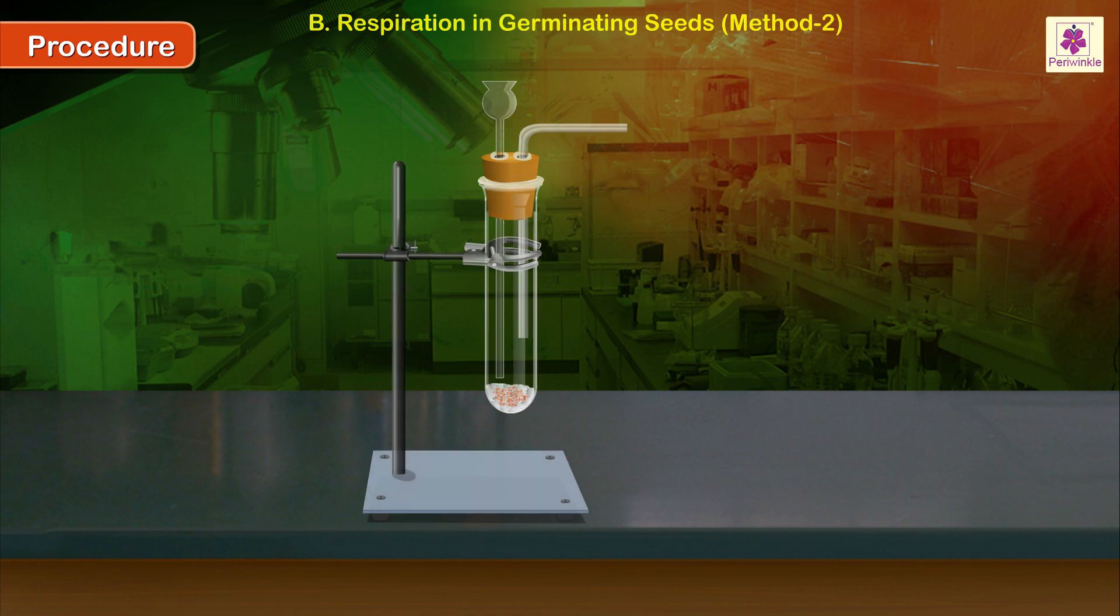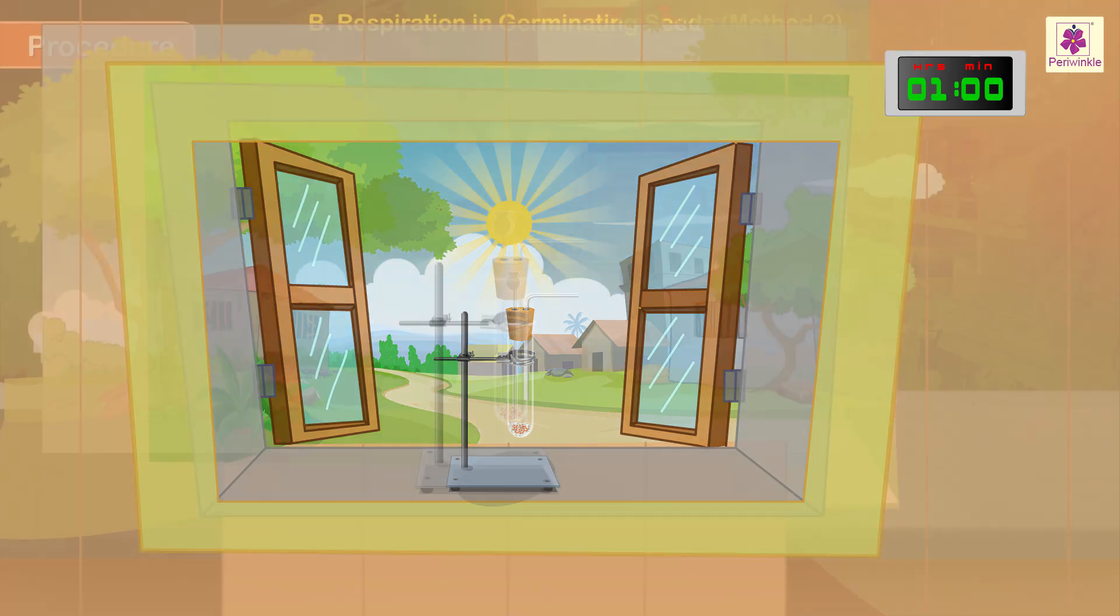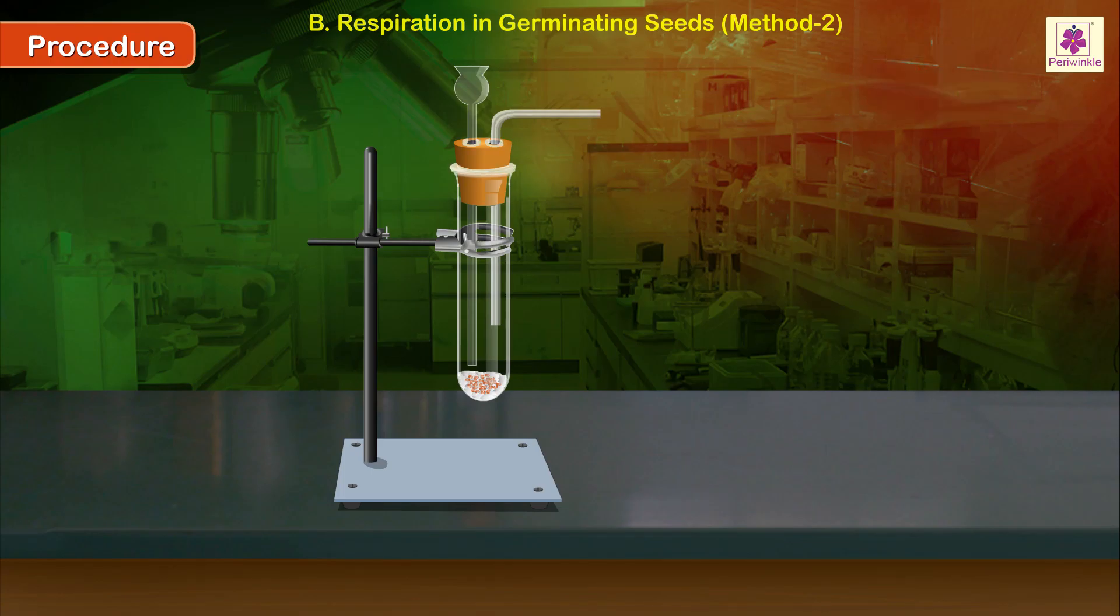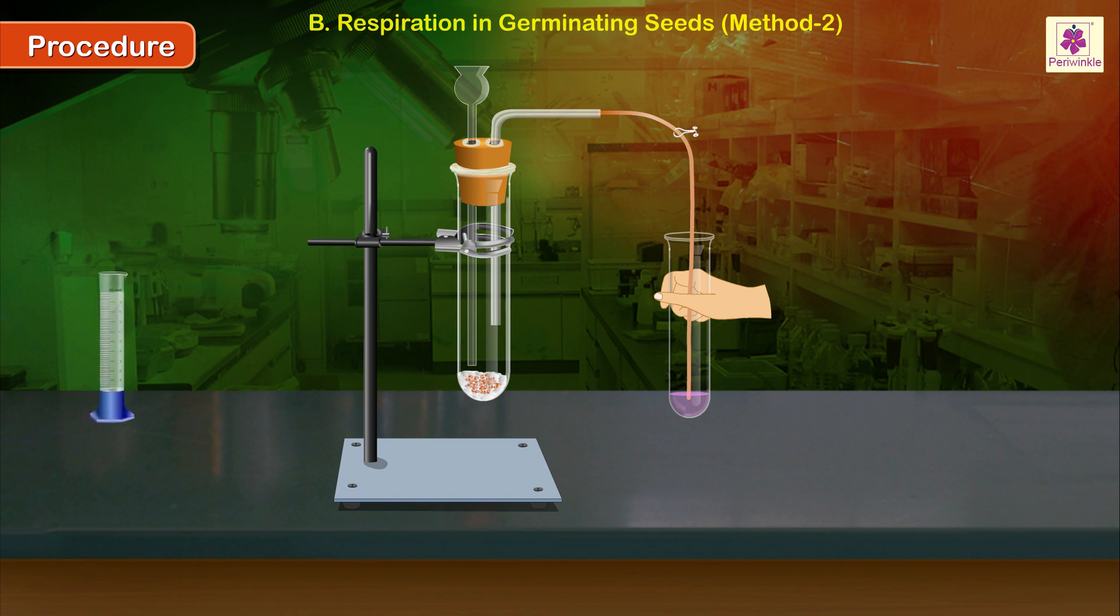Place the experimental setup in bright sunlight for one hour. Dip free end of the rubber tubing into the test tube containing phenol red solution. Release the pinch cork. Pour 10 ml of water through the thistle funnel into the boiling tube.